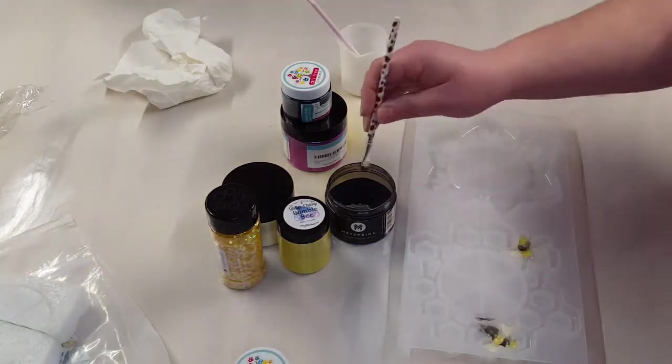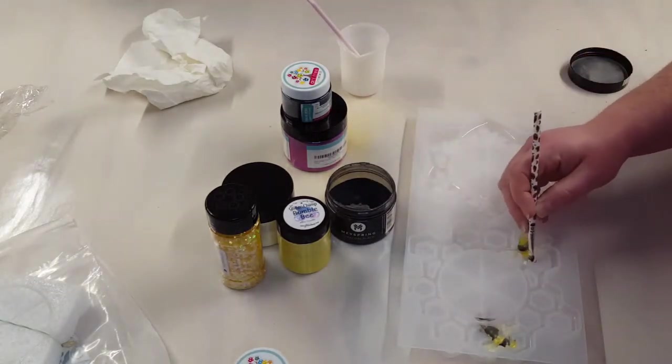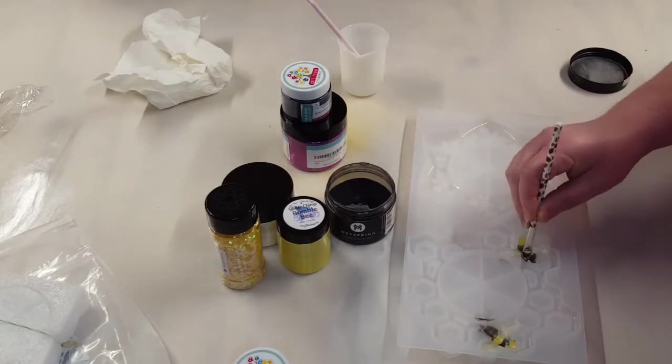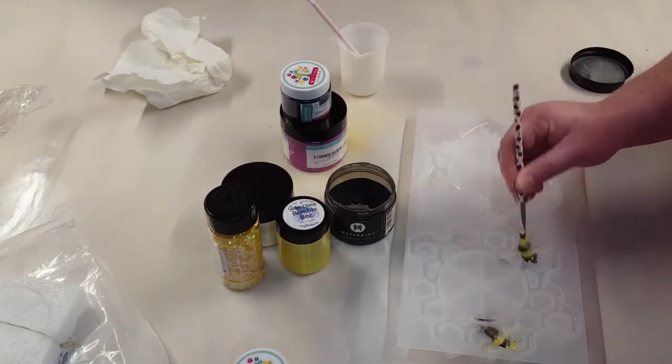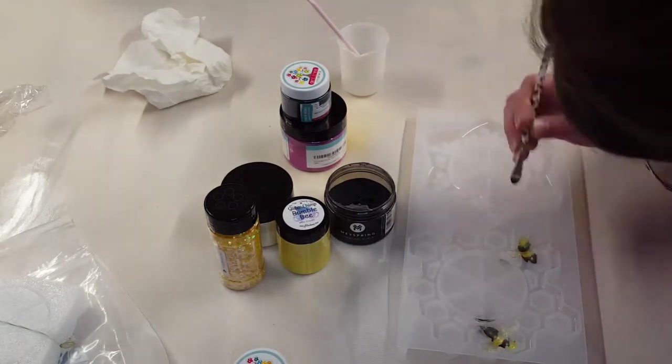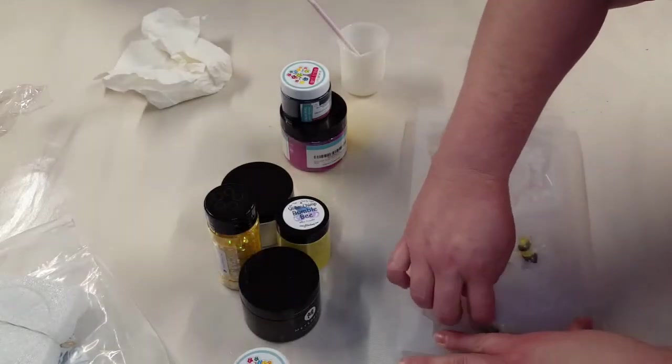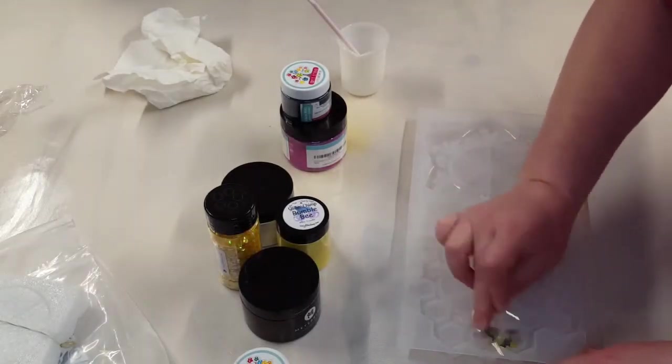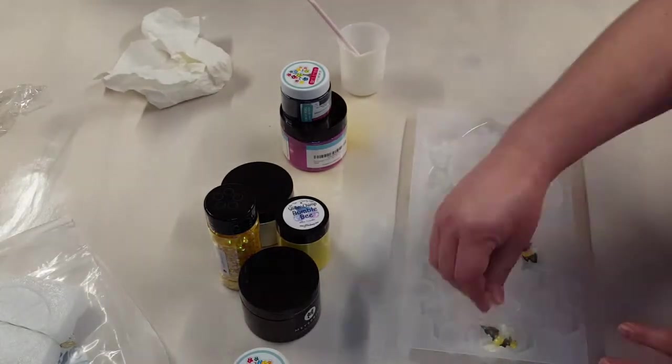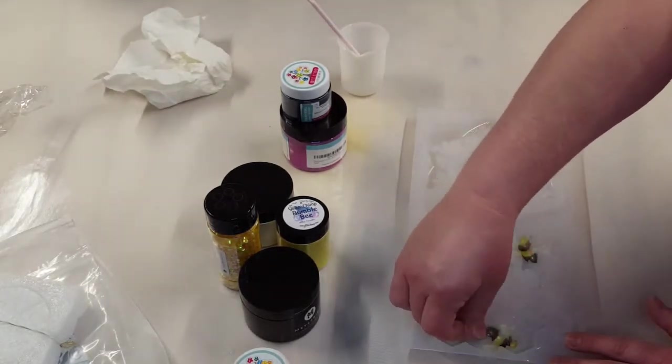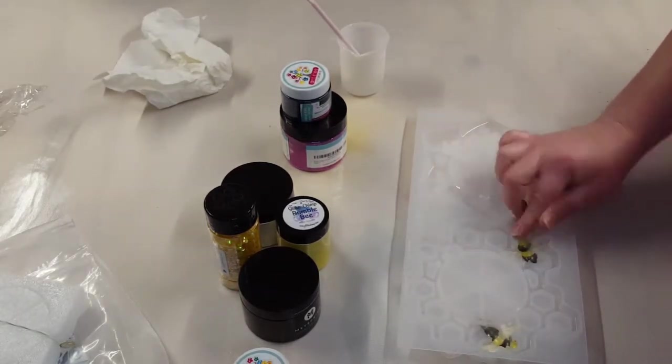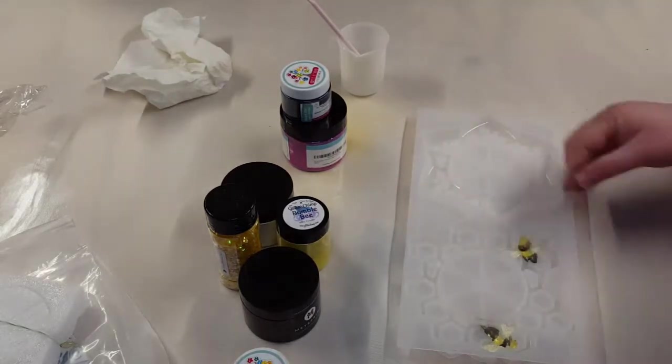So once I finish painting my bees I will come in here with some clear packing tape and get off that mica that flicked everywhere. So see here I've got my tape and the tape will not damage your mold. I'm getting off what I can with that tape and then I will come in with an alcohol wipe and clean the rest of it off.